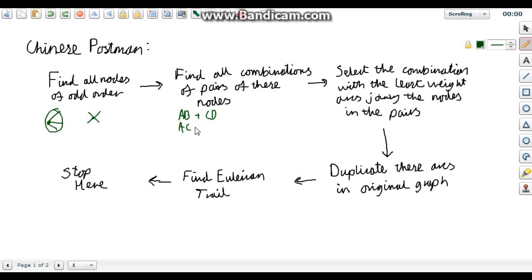Another would be A and C plus B and D and so on. You want to find all the possible combinations of pairing your odd order nodes together.